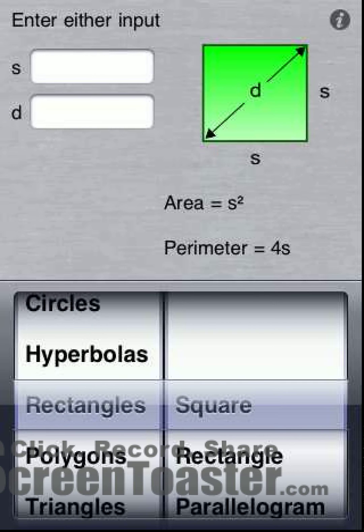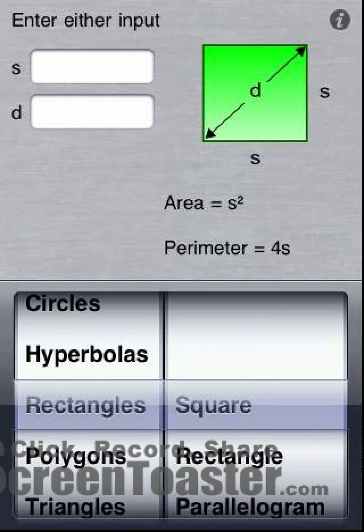As seen by the instructions along the top, we can either enter the length of one of the sides or the diagonal length. We'll enter a side length of two.